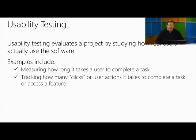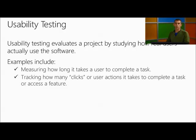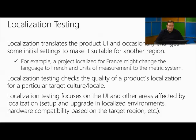Usability tests evaluate a project by studying how real users actually use the software — watching users and understanding how many clicks it takes them to complete a specified action, or how long it takes them to complete a task.